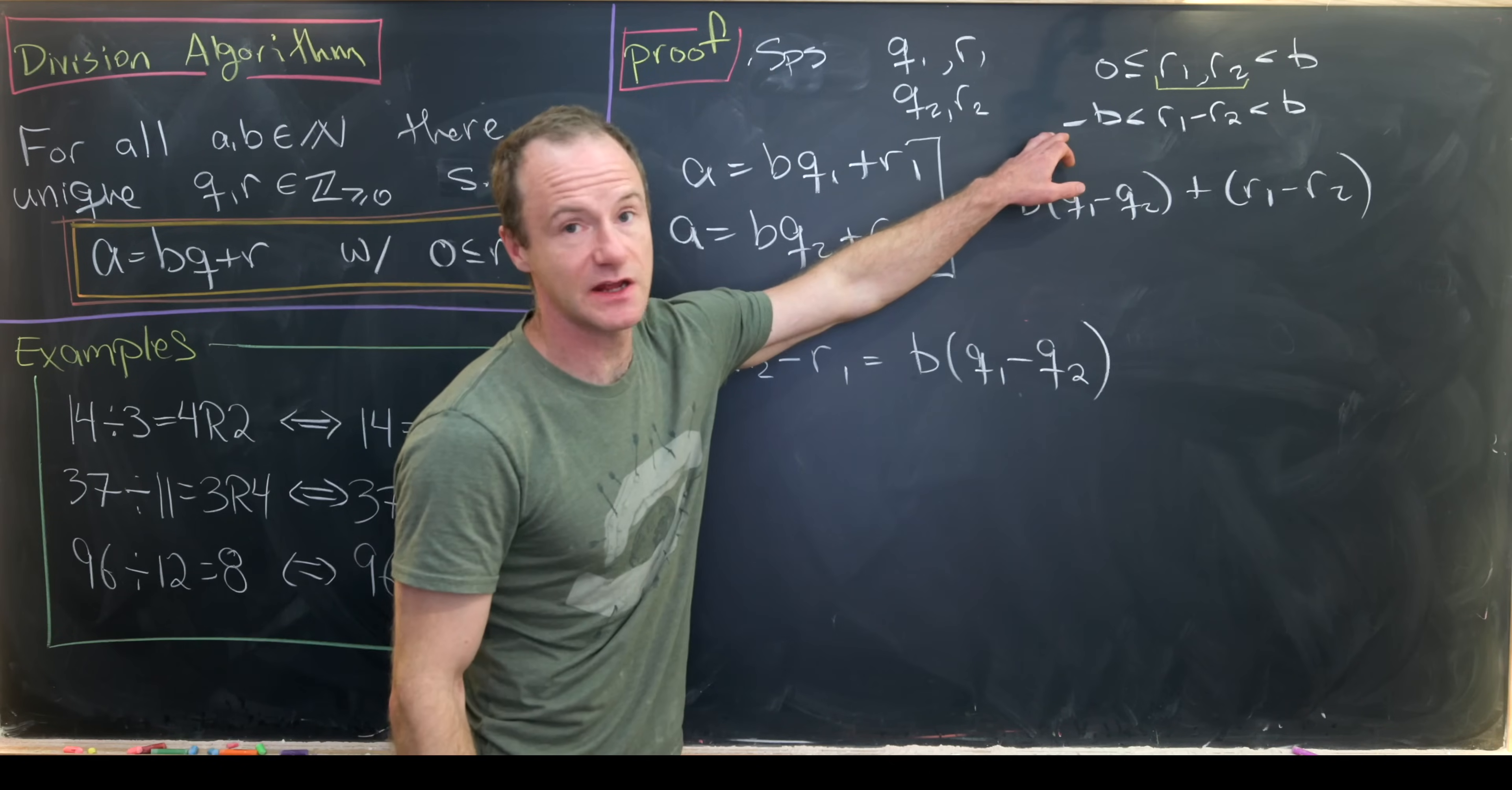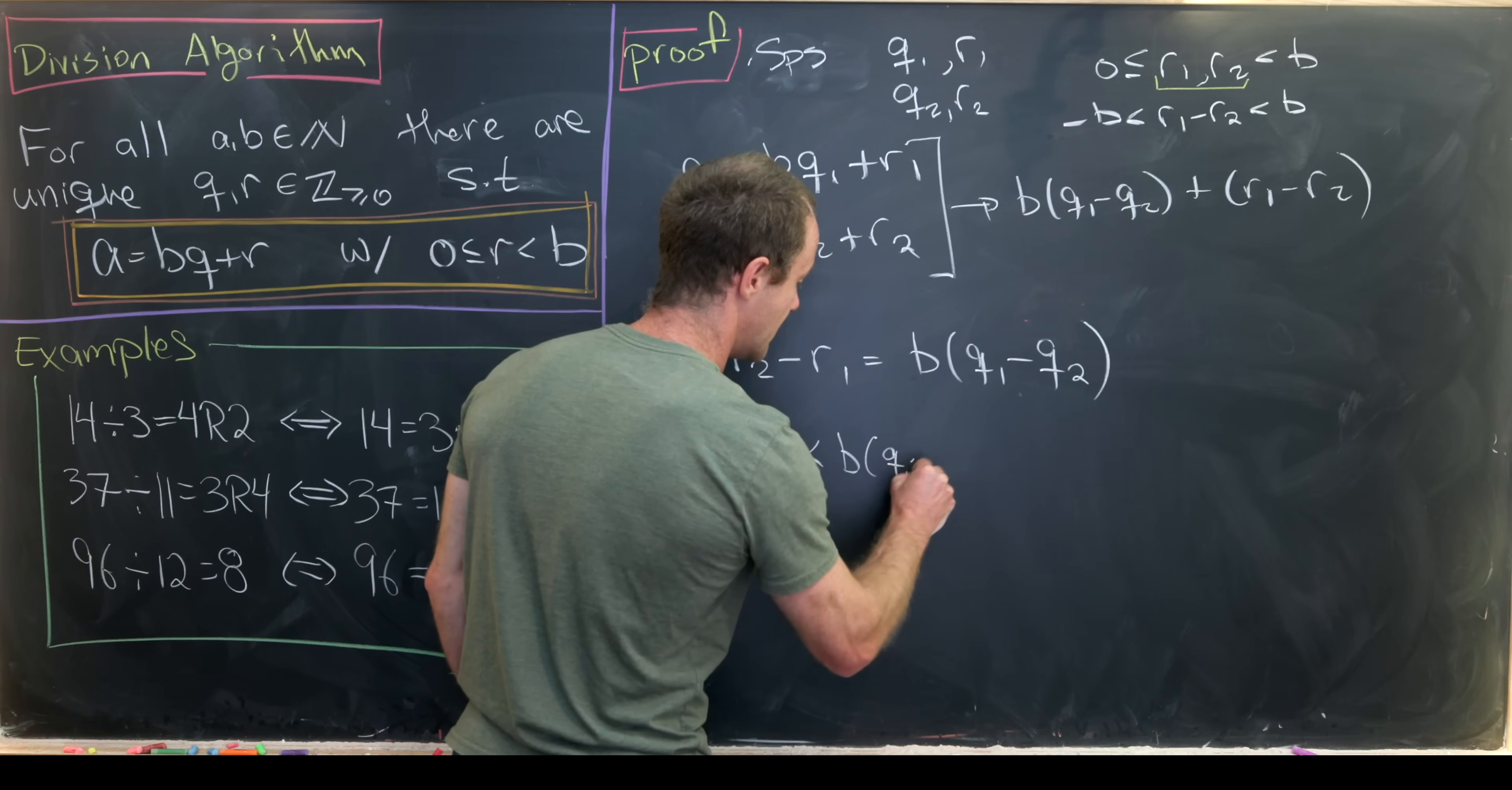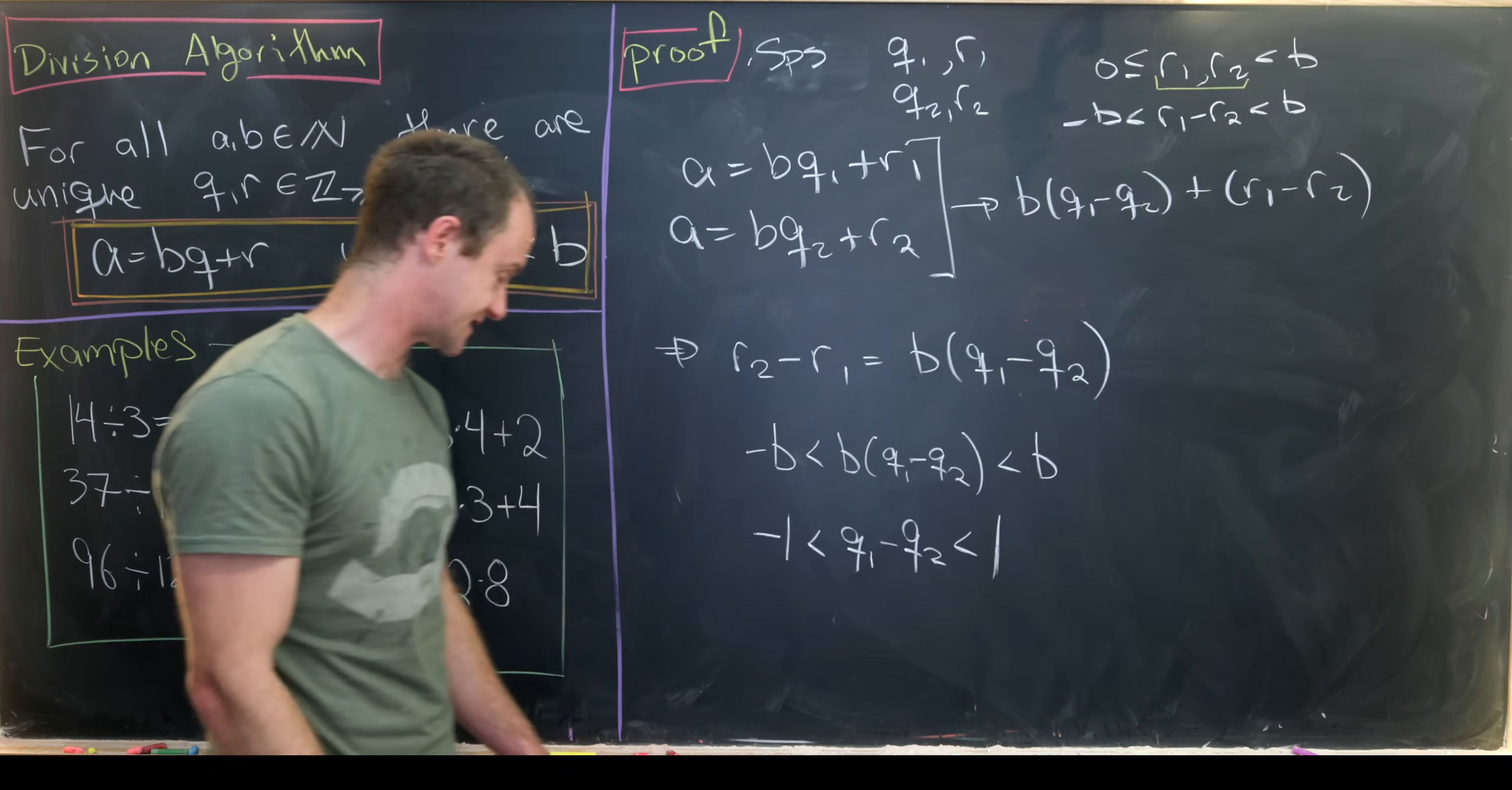But now let's take this inequality which we derived up here and put b times (q1 minus q2) inside. So let's see, that's going to give us minus b is strictly less than b times (q1 minus q2), which is strictly less than b. But then dividing by b gives us negative 1 is strictly less than q1 minus q2, which is strictly less than 1.